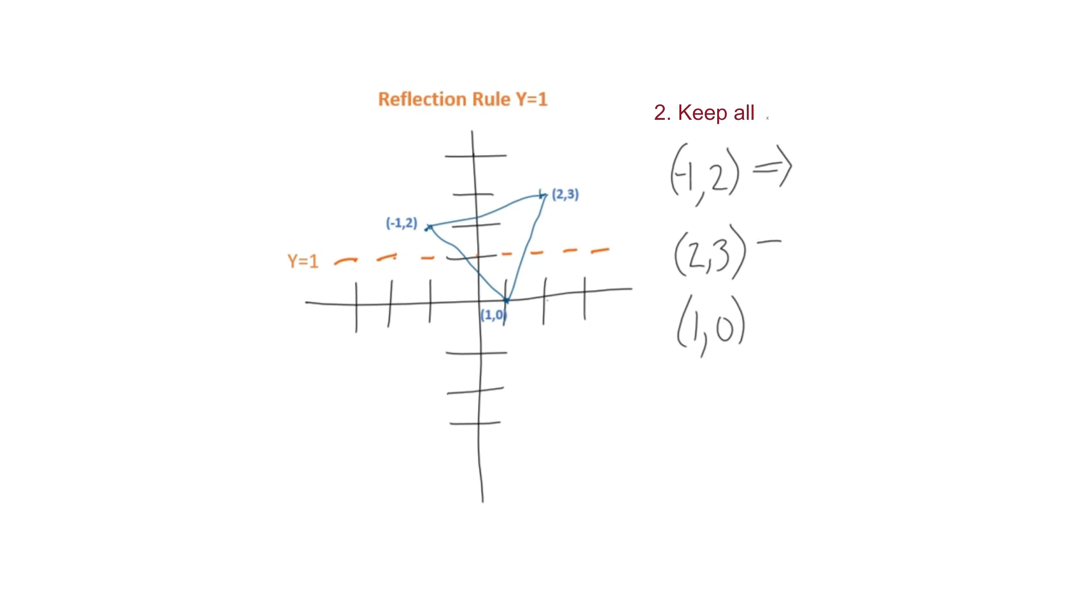Our second step is to keep the x values: -1, we don't know y at this point, 2 for our second point, and 1 for our third point.